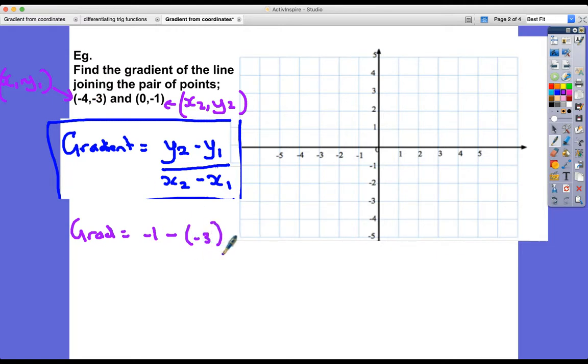Well, we know if we're subtracting negative numbers, what that means. And then x2 is 0. And x1 is minus 4. So this subtracts minus 4. So what we've got then, we've got minus 1. Now, if we subtract a negative number, that's the same as adding. So we've got that in both cases, 0 plus 4. And so minus 1 add 3 is 2. And 0 plus 4 is 4. And that's the same as 1 half.